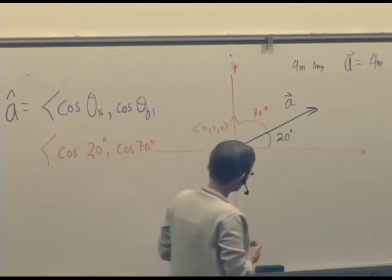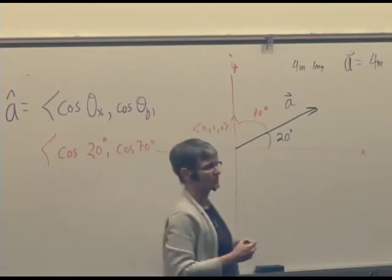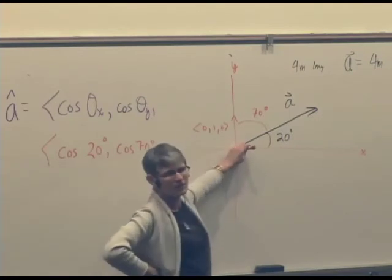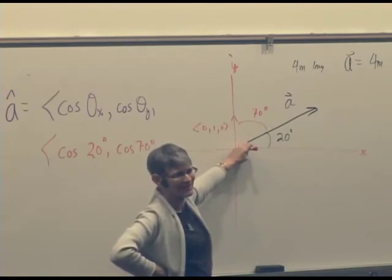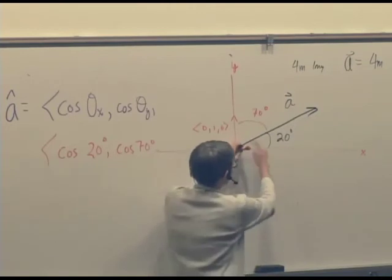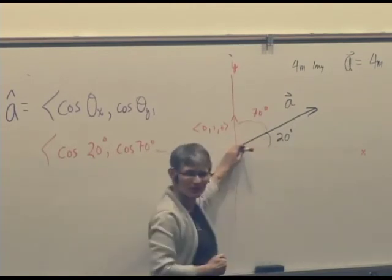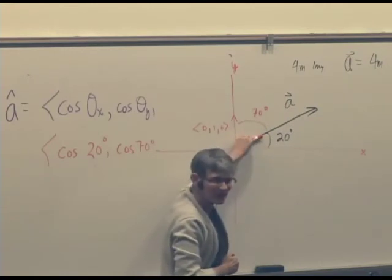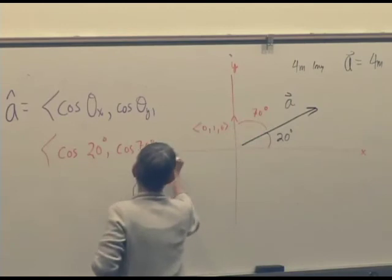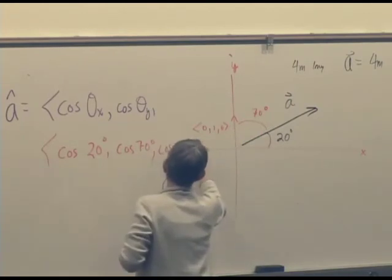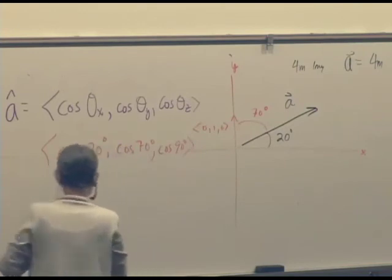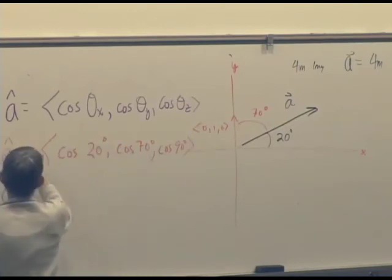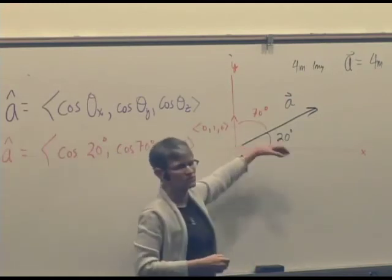Now we start with a unit vector along the positive z-axis, so that's our unit vector (0, 0, 1). What's the angle we have to rotate that through to get to our vector A? Is it 0 or is it 90? It's 90, because this vector is in the plane and the z-axis is perpendicular to the plane — so this is a 90 degree angle. We have cosine 90 degrees, or more generally cosine theta sub z, and this gives us our unit vector A-hat.